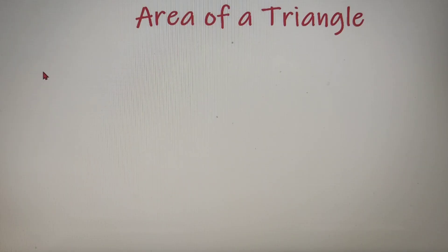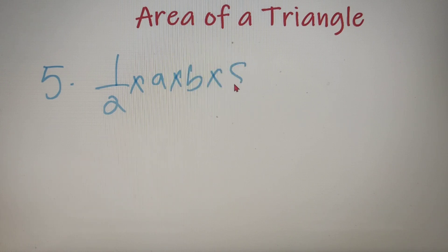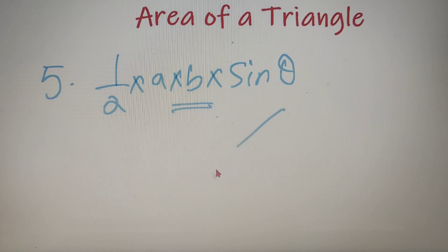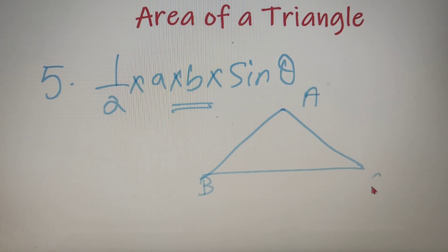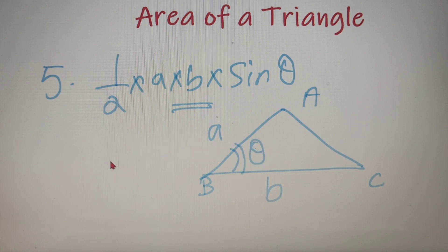The fifth and last formula that we can use for calculating the area of a triangle is half into A into B into sine theta. This is one of the simplest formulas for calculating the area of a triangle. So suppose we have a triangle A, B and C, where the length of side AB is equal to A, the length of side BC is equal to B, and the angle contained between both these two sides is equal to theta. Then by using the formula half AB sine theta, we can calculate the area of the triangle very easily.